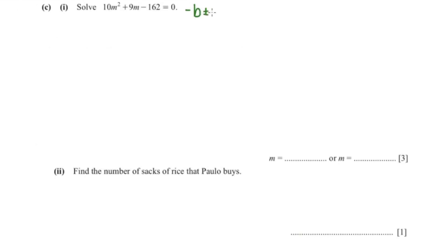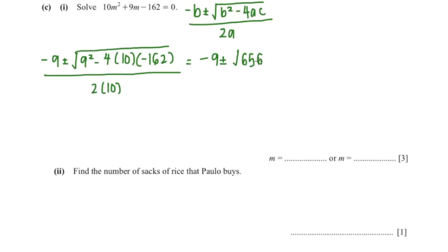Now the next question wants us to solve it. So I'm going to use the quadratic formula. So that is negative B plus minus square root of B squared minus 4AC over 2A. So our B is 9. So that's negative 9 plus minus 9 squared minus 4 multiply with 10 multiply with negative 162 and square root the whole thing.